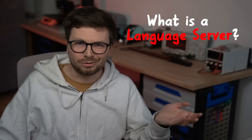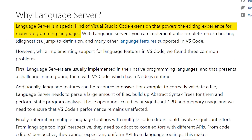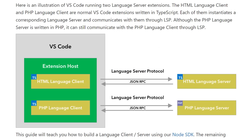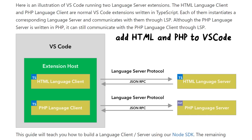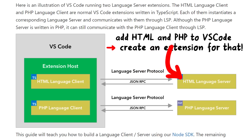So what is a language server? Luckily there is a great guide from the official VS Code documentation explaining it. A language server is a special kind of Visual Studio Code extension that powers the editing experience for many programming languages. With language servers you can implement autocomplete, error checking (called internally diagnostics), jump to definition, and many other language features. Let's say you want to add HTML or PHP language features like checking for syntax errors or autocompletion. Then you create a VS Code extension, and part of this extension is the actual VS Code extension itself — the language client. But then your extension executes another process, another program, which is the respective language server.